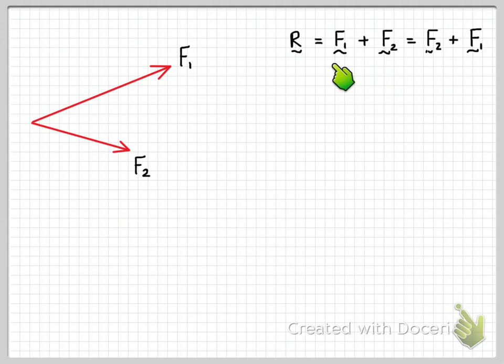So we can write that as an equation again. So we have our resultant vector r equals f1 plus f2 or is equal to f2 plus f1. So this time we're going to move the vector f1 so that the tail of f1 is now at the tip of f2.